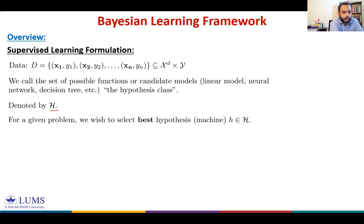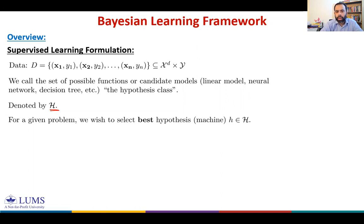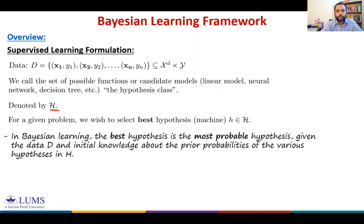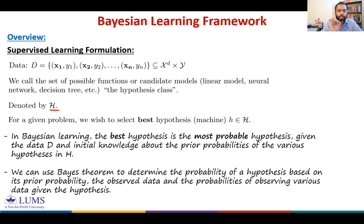For a given problem, we want to select the best hypothesis from this hypothesis class — that was our objective defined in the very first lecture. In Bayesian learning, we achieve this by finding the most probable hypothesis in the hypothesis class given the data and some initial knowledge about the prior probabilities of the various hypotheses in H. We use Bayes' theorem to determine the probability of a hypothesis based on its prior probability, the observed data, and the probabilities of observing various data given the hypothesis.